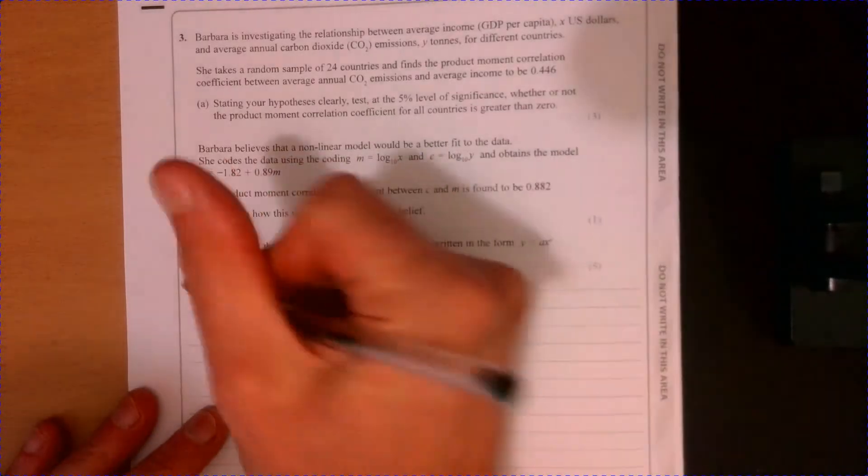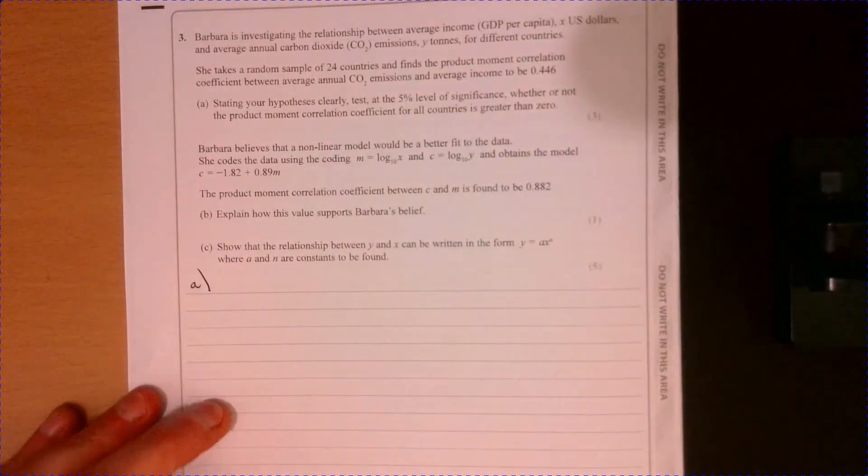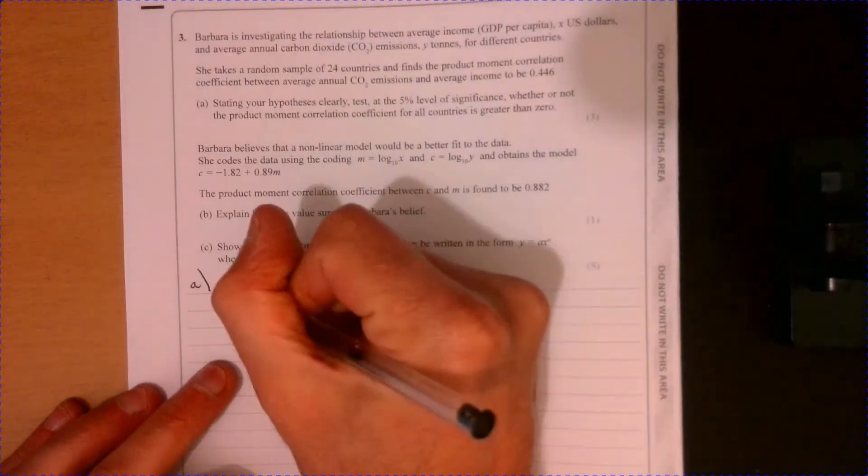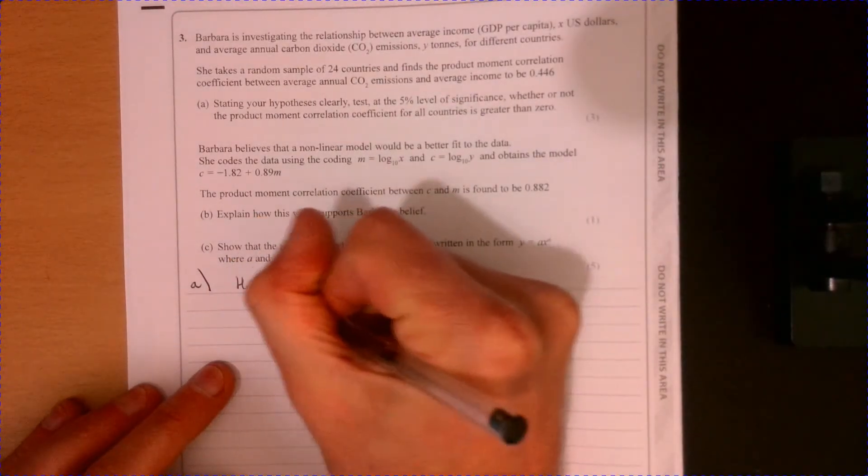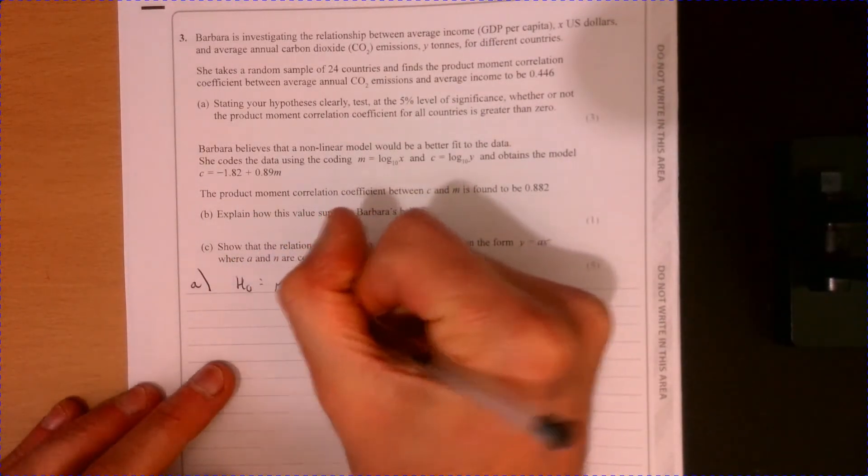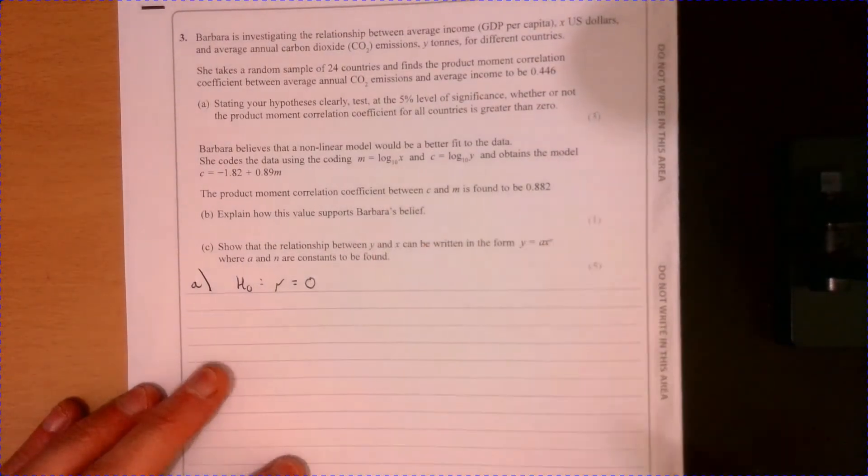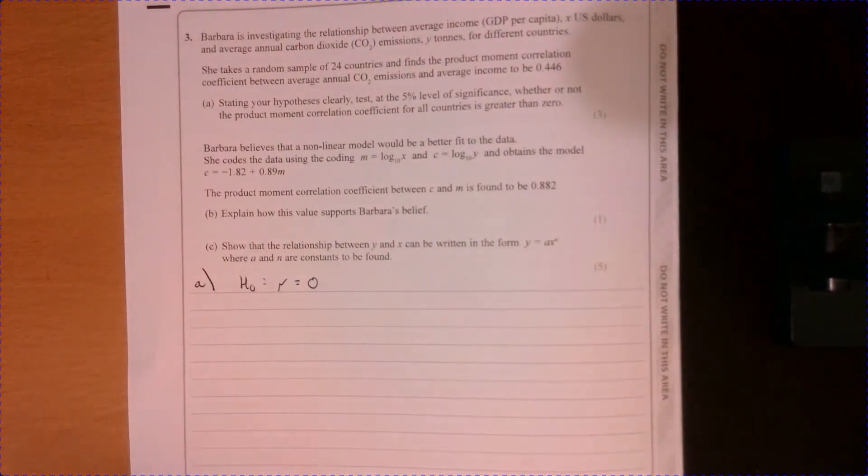Question three. So let's set this test up. The null hypothesis is where the correlation is going to be. Well, there's no correlation. It's just going to be zero.